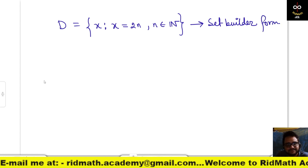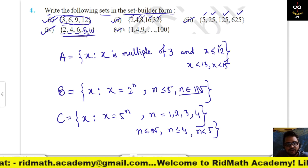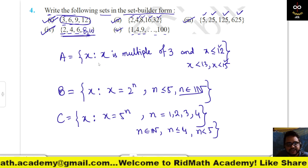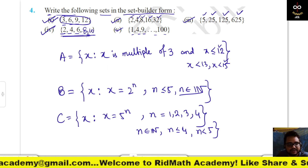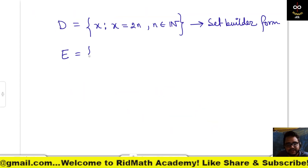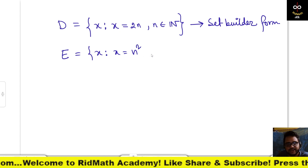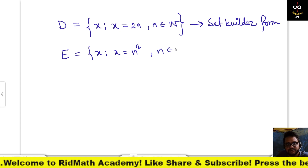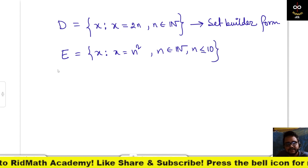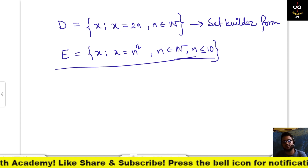E: the set {1, 4, 9, … , 100} — these are squares, so E = {x : x = n², n ∈ ℕ, n ≤ 10}. This is the set builder form. Go to the next exercise: list all the elements of the following sets.